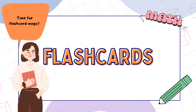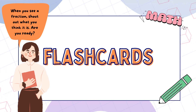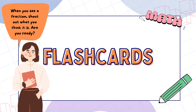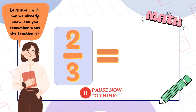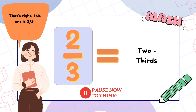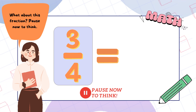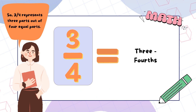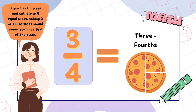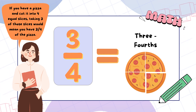Time for flashcard magic! When you see a fraction, shout out what you think it is. Are you ready? Let's start with one we already know — can you remember what this fraction is? That's right, this one is two thirds. Well done. What about this fraction? Pause now to think. Three fourths represents three parts out of four equal parts. If you have a pizza and cut it into four equal slices, taking three of those slices would mean you have three fourths of the pizza.